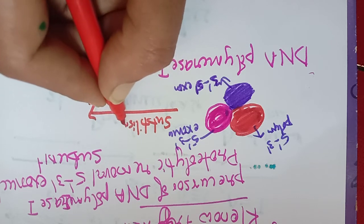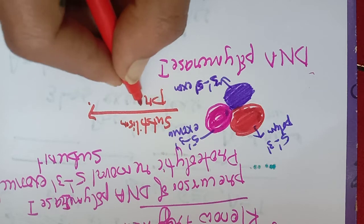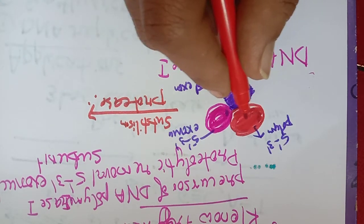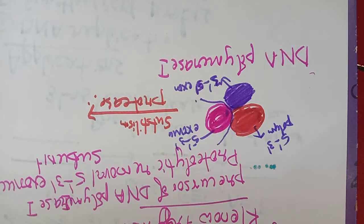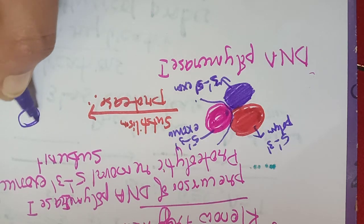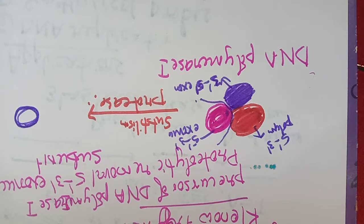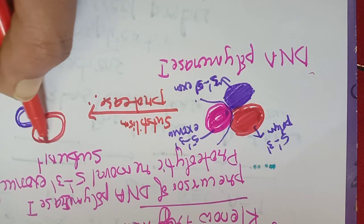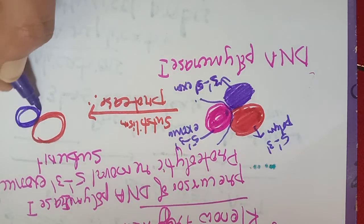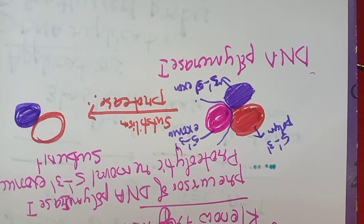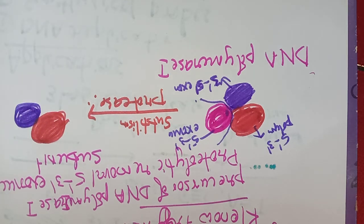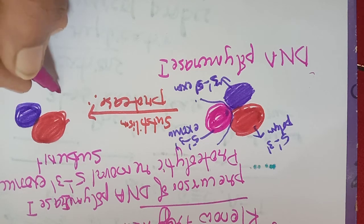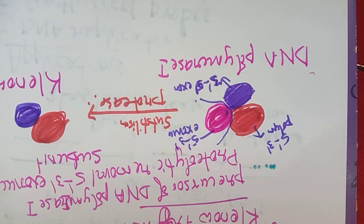A proteolytic enzyme known as subtilisin is added. When this protease is added, it removes the 5' to 3' exonuclease subunit. We are then left with two subunits — the 5' to 3' polymerase subunit and the 3' to 5' exonuclease subunit. These two subunits together are known as the Klenow fragment.